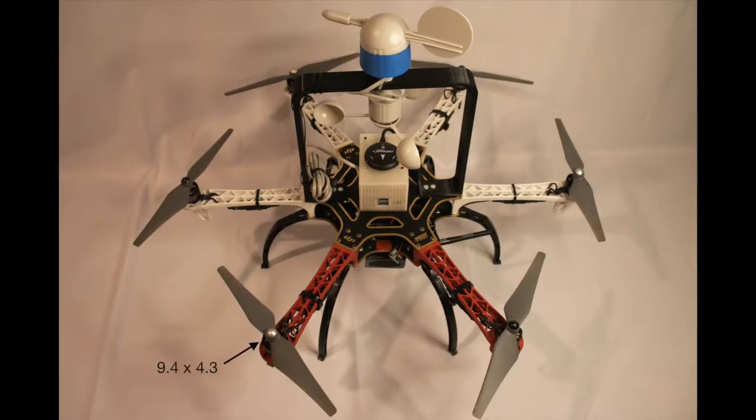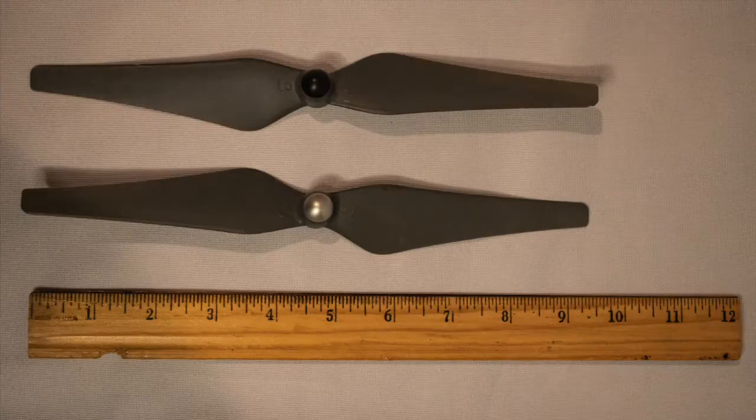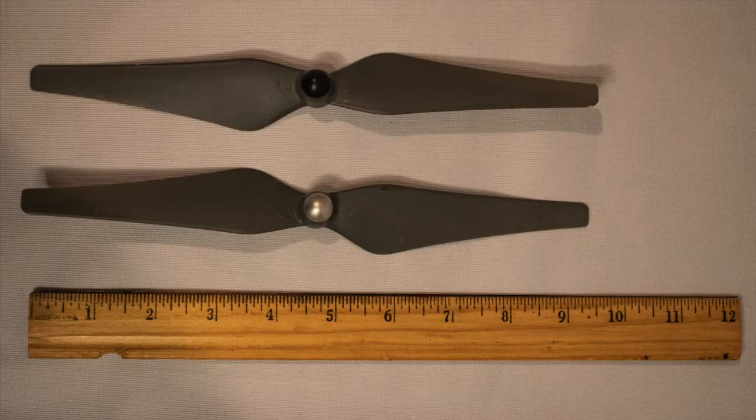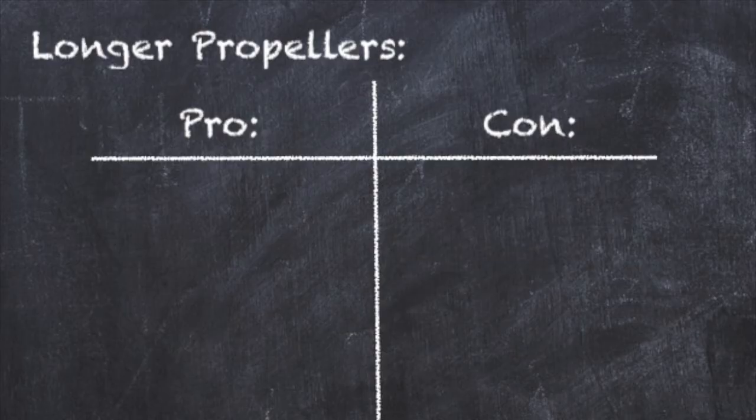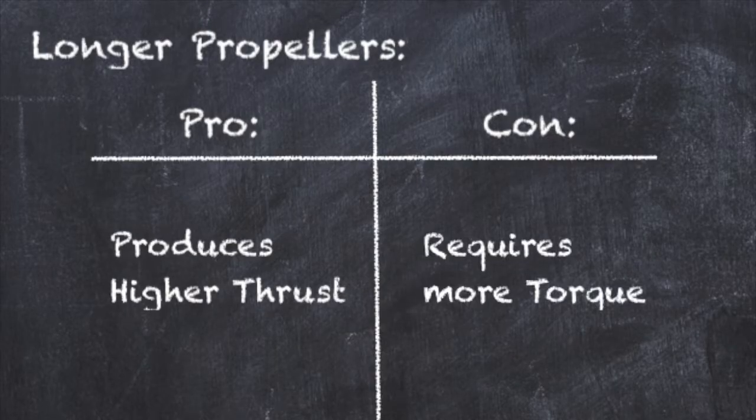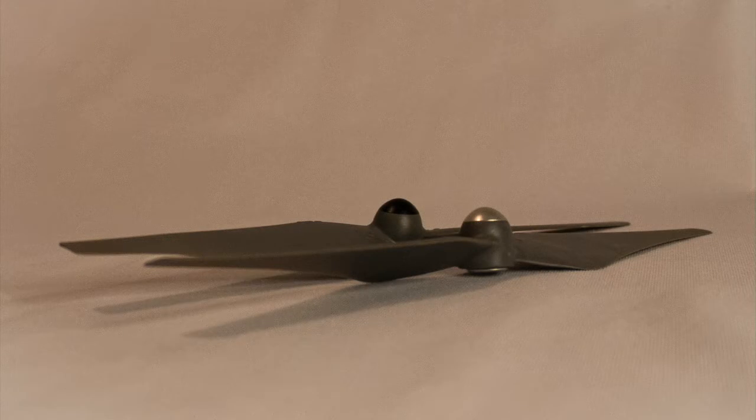DJI 9.4 by 4.3 dynamically balanced propellers were chosen considering stability and payload. 9.4 refers to the propeller length in inches. Longer propellers generate more thrust, but also increase torque requirements on the motor. 4.3 refers to the propeller pitch, a measure of the angle of the propeller blades.